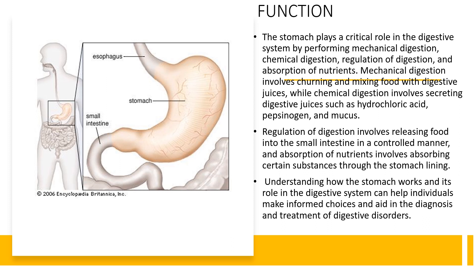Chemical digestion: the stomach secretes digestive juices including hydrochloric acid, pepsinogen, and mucus. Hydrochloric acid helps to break down food particles and kill harmful bacteria, while pepsinogen is converted into pepsin by the acid. Pepsin is the enzyme that helps in the digestion of proteins, breaking them down into smaller peptides.